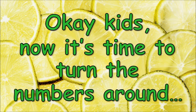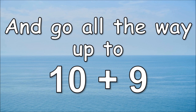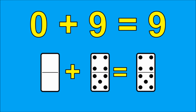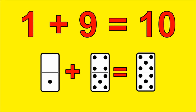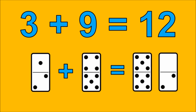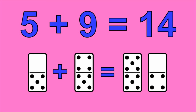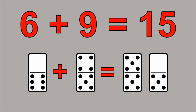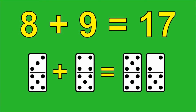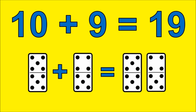Okay kids, now it's time to turn the numbers around. We're going to start with zero plus nine and go all the way up to ten plus nine. Here we go. Zero plus nine is nine. One plus nine is ten. Two plus nine is eleven. Three plus nine is twelve. Four plus nine is thirteen. Five plus nine is fourteen. Six plus nine is fifteen. Seven plus nine is sixteen. Eight plus nine is seventeen. Nine plus nine is eighteen. Ten plus nine is nineteen.